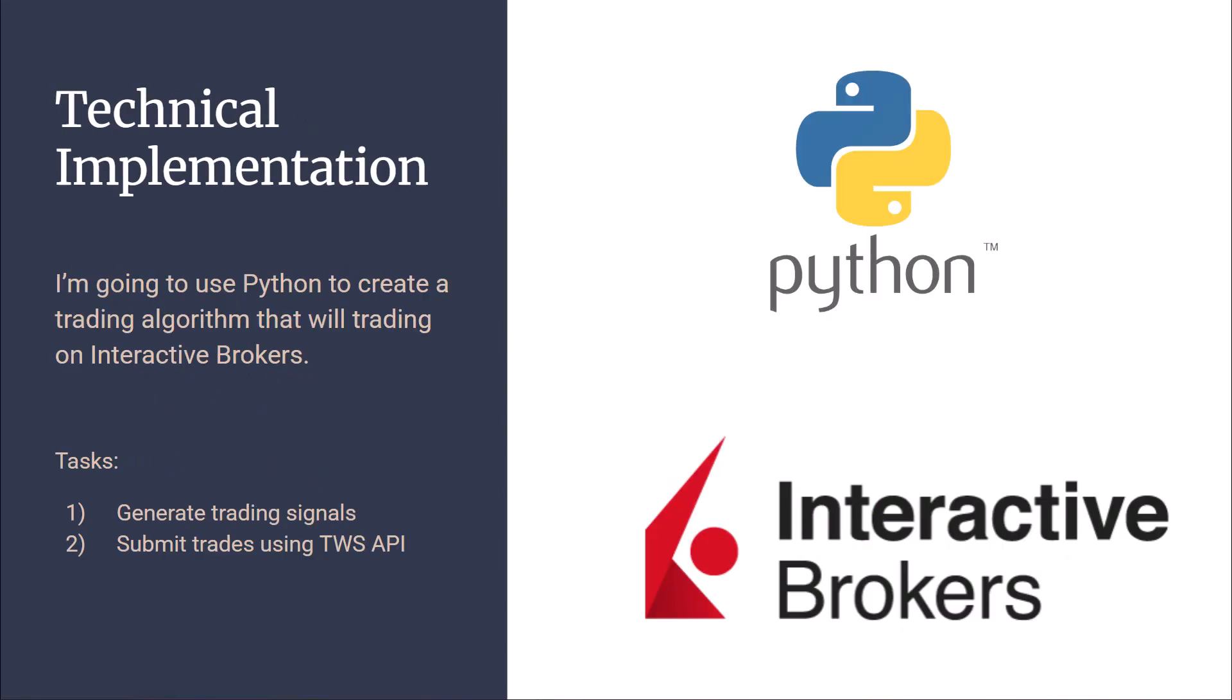So now the question is, how do we do this? What I'm going to do is I'm going to use Python to create a trading algorithm that will trade on Interactive Brokers. With Python, we will generate the trading signals, and then we will submit the trades using TWS API. We will observe our trades live on the Interactive Brokers platform.